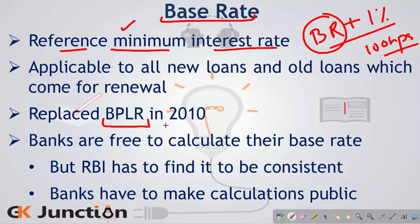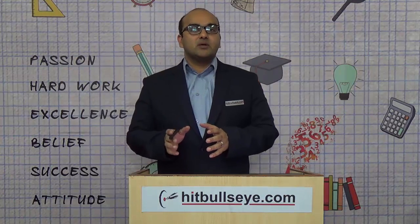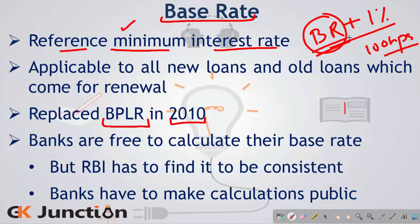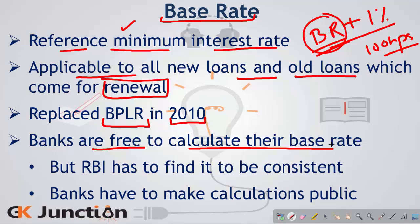The base rate system replaced the Base Prime Lending Rate (BPLR) system which was in place up till 2010. This was replaced because banks could give out loans below BPLR before 2010. Now, base rate is defined as the minimum interest rate at which the bank can give loans. After 2010, base rate is applicable to all new loans and even old loans which come up for renewal. Banks are free to calculate their base rates according to the cost at which they borrow funds; however, RBI must find the calculation consistent or appropriate, and the calculations must be made public by the bank on their website or in their offices.